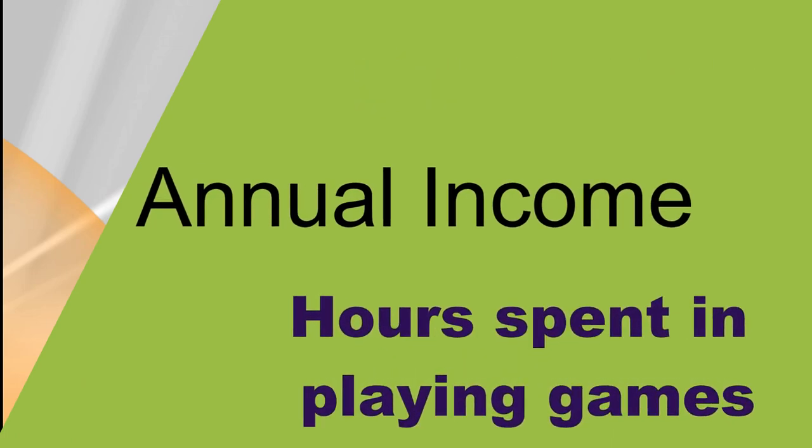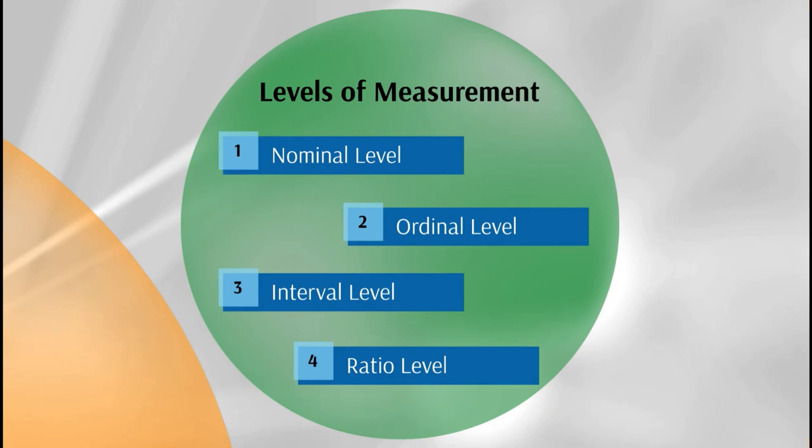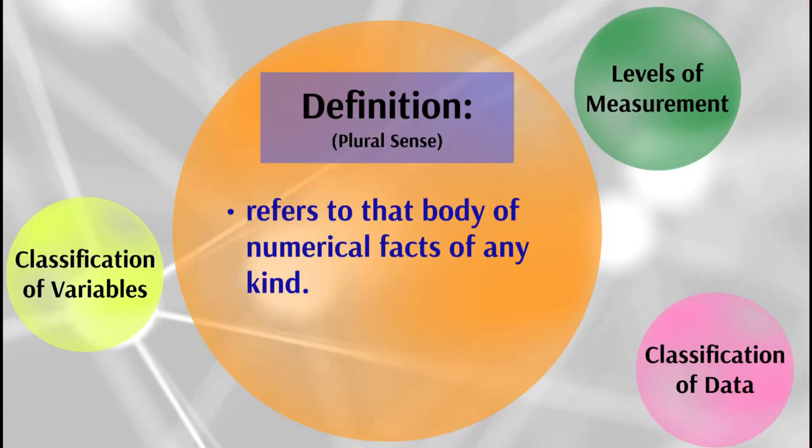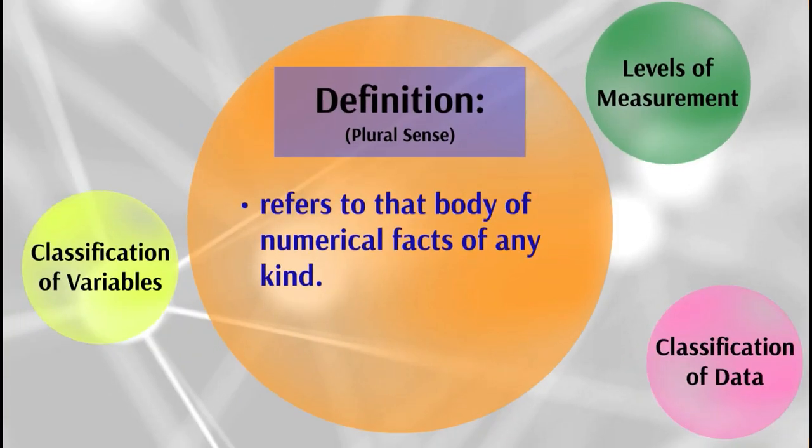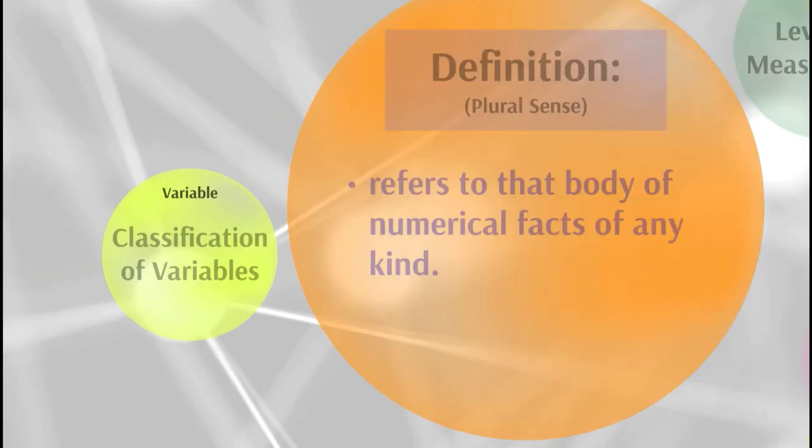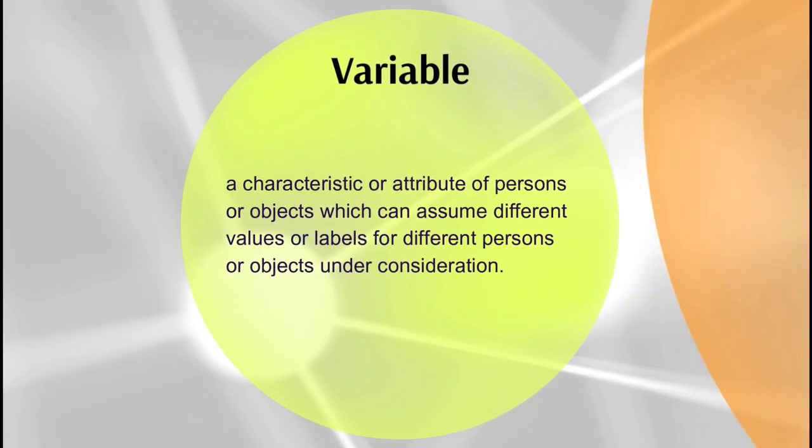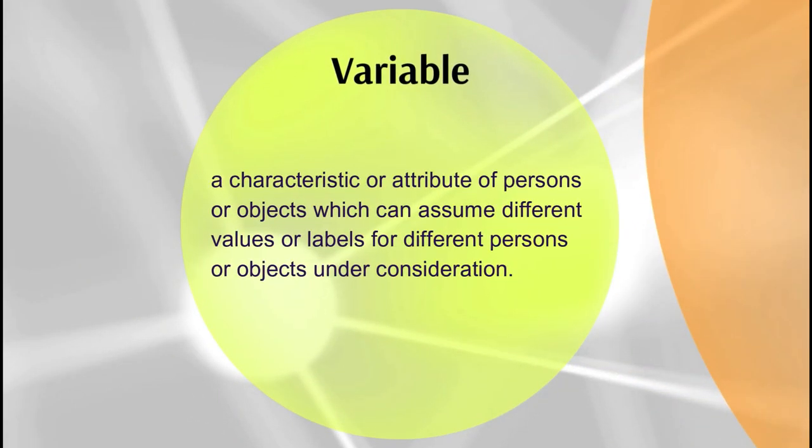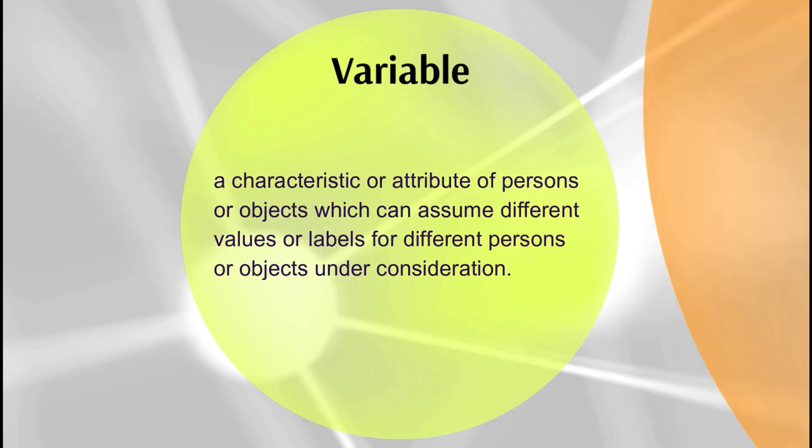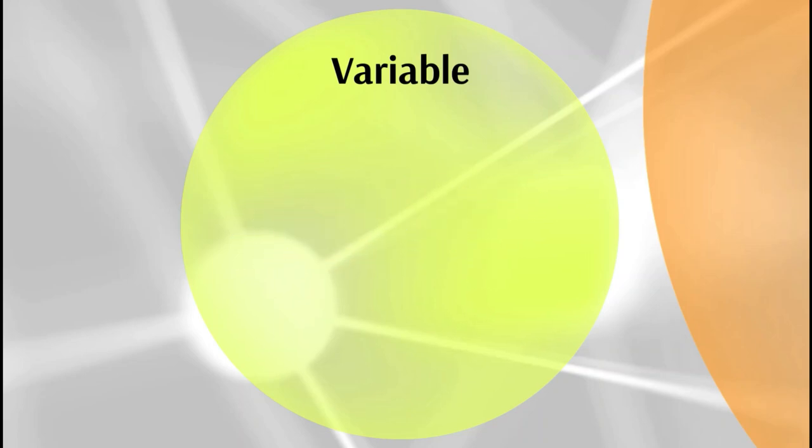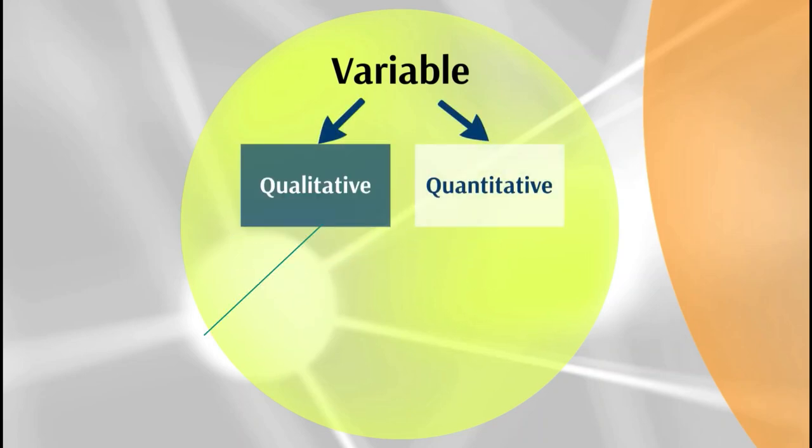Let's go now to classification of variables. Generally, a variable is a characteristic or attribute of persons or objects which can assume different values or labels. A variable can either be qualitative or quantitative. Qualitative variable yields categorical responses, for instance occupation or civil status.